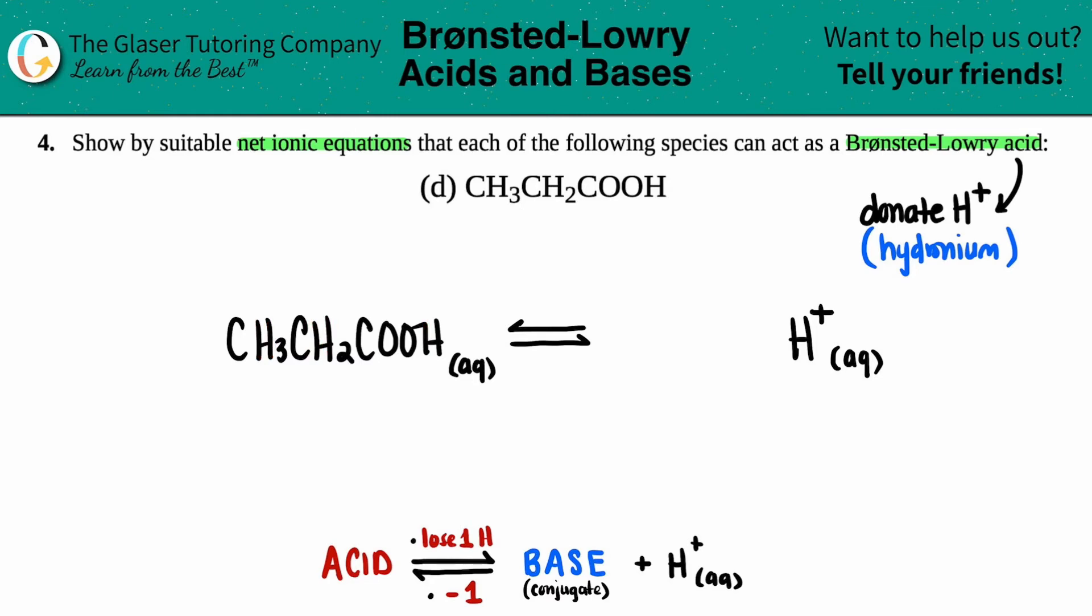Now, the rule of thumb that we have to know is that the acidic H is always the one that's bound to the more electronegative element. So if I just quickly draw a periodic table and say that this is electronegativity, we have to know the trend of electronegativity. As I go from left to right, electronegativity increases. And as I go from top to bottom, it decreases.